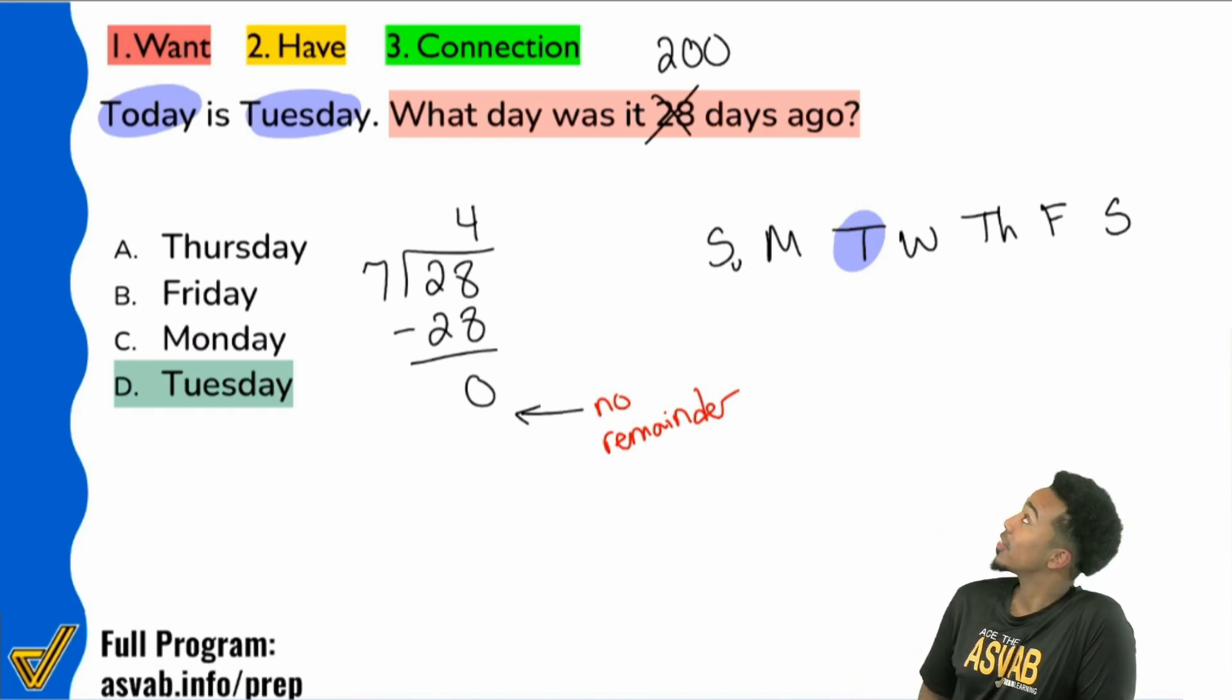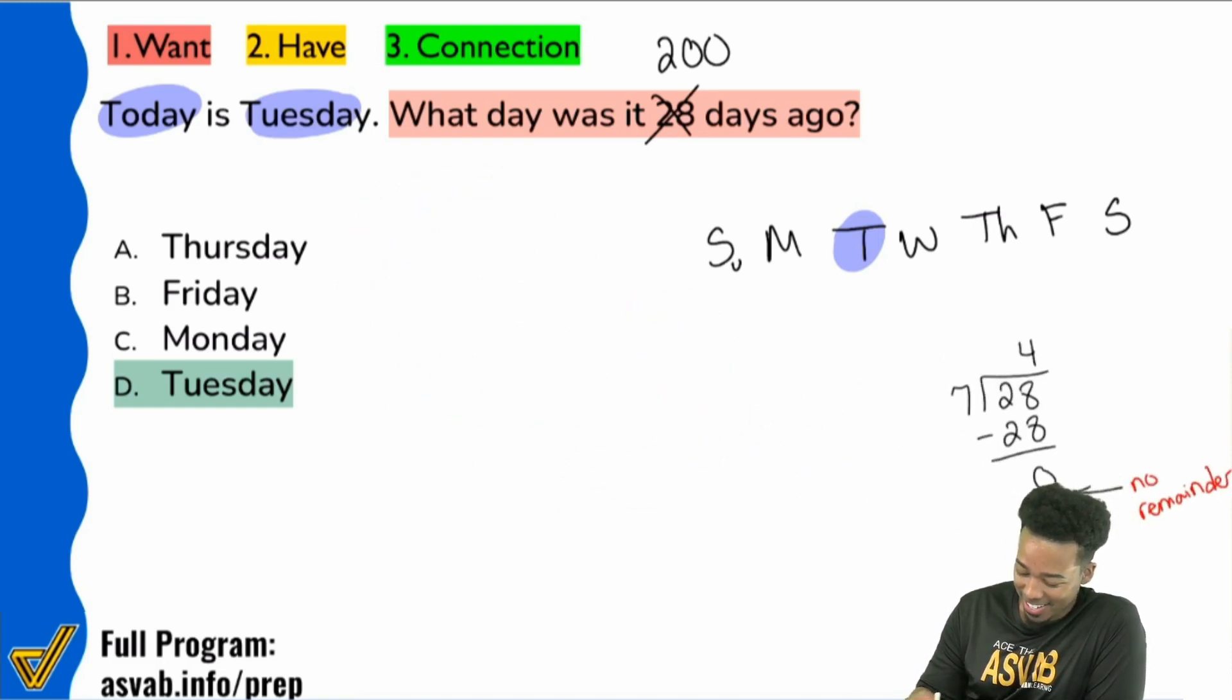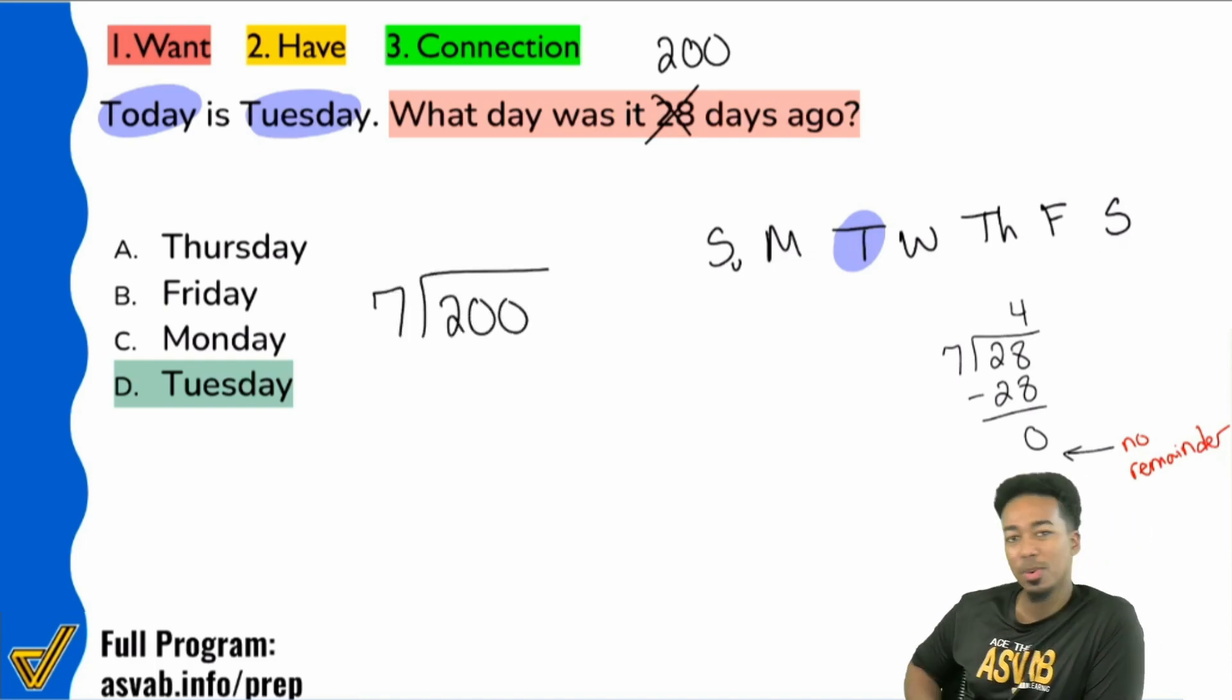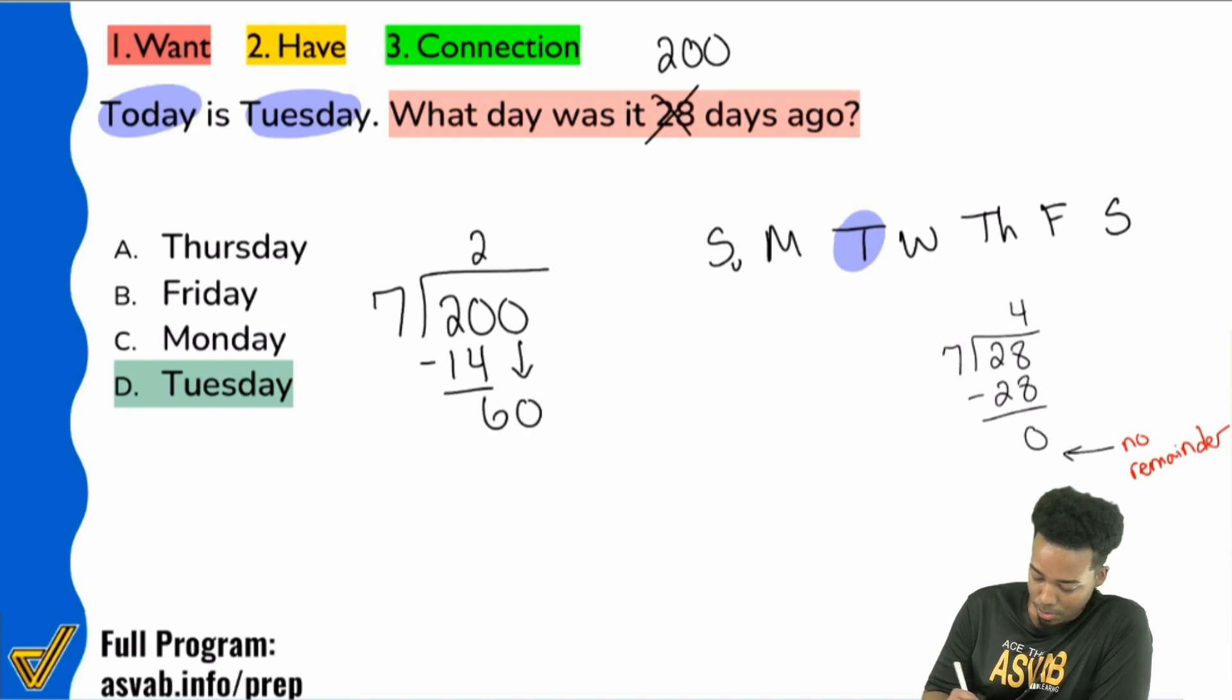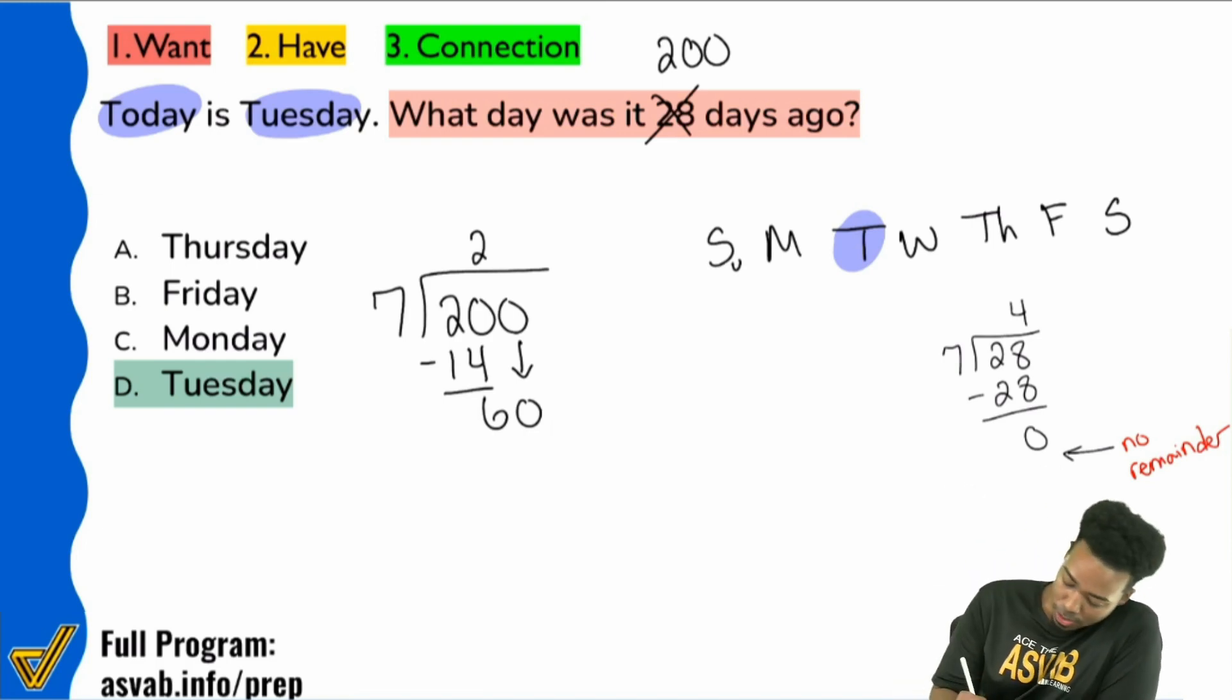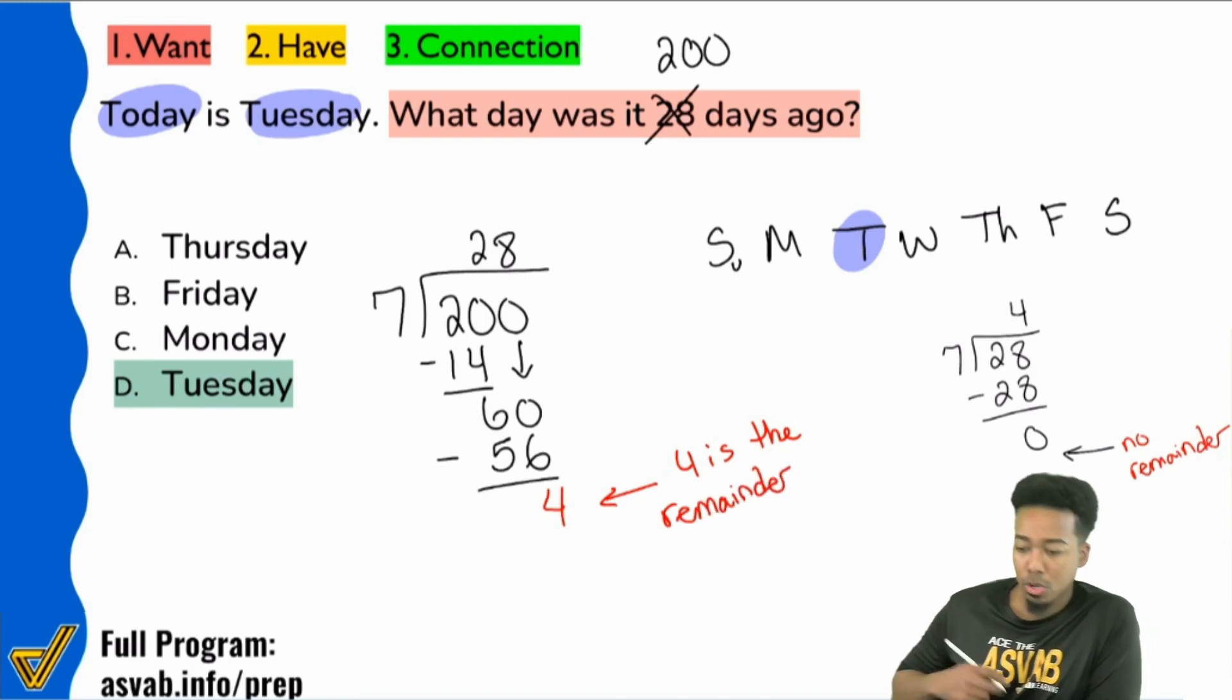Now let's take a look at that 200. If I go ahead and divide seven into 200, let's see what happens. Seven goes into 200 how many times? Seven goes into 20 twice. Take away the 14. Got six. Bring the zero down. Seven goes into 60 eight times, because seven times eight is 56. So that'll be eight right there. Minus 56. And we have a remainder of four. Four is the remainder.